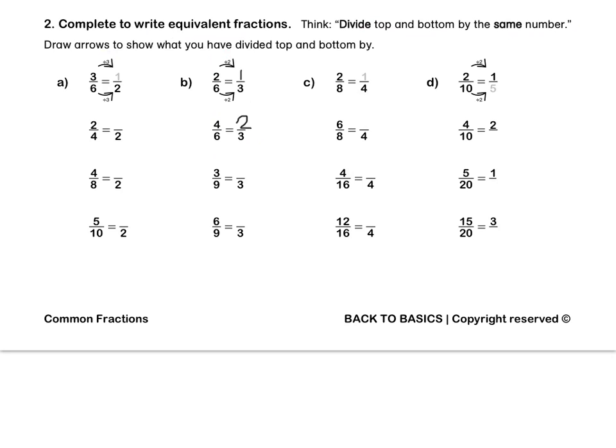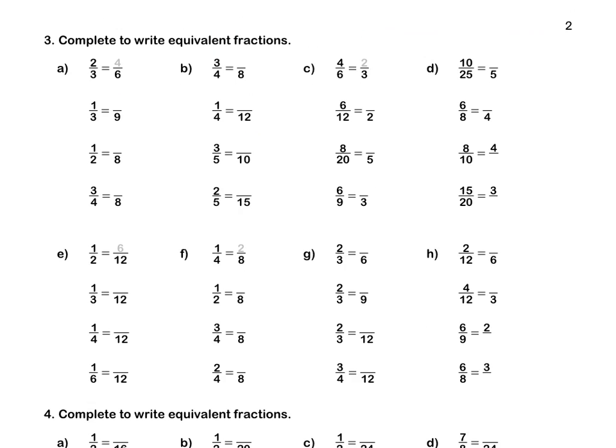Pause this video to complete question 2 by yourself. Use the memo to mark this entire page by yourself. Remember to correct any of your mistakes. Question 3: Complete to write equivalent fractions. A: we times by 2 top and bottom, so the answer is 4 sixths.